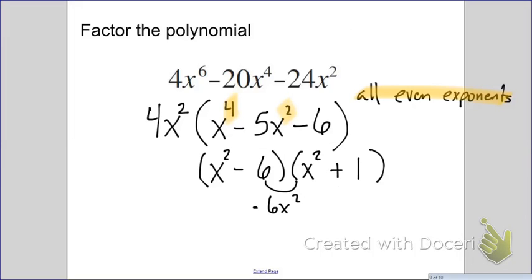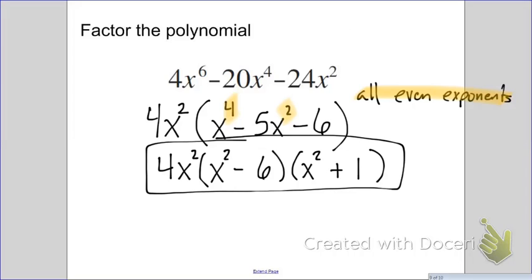Now, don't forget that you did factor out a GCF in the very beginning of 4X squared, and rewrite it, and you have your answer.